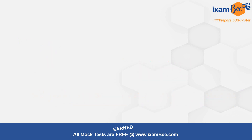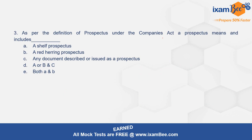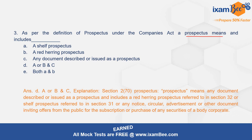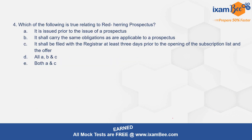Question number three: as per the definition of prospectus under the Companies Act, a prospectus means and includes what? The correct option is B — a shelf prospectus or a red herring prospectus and any document described or issued as such. Section 2, clause 70 defines prospectus as any document described or issued as a prospectus, and it includes a red herring prospectus or shelf prospectus, or any notice, circular, advertisement, or other document used by the company for inviting offers from the public for subscription or purchase of any securities.